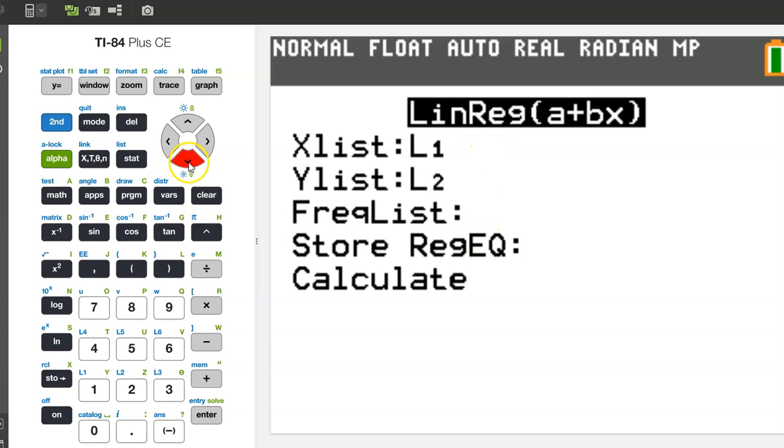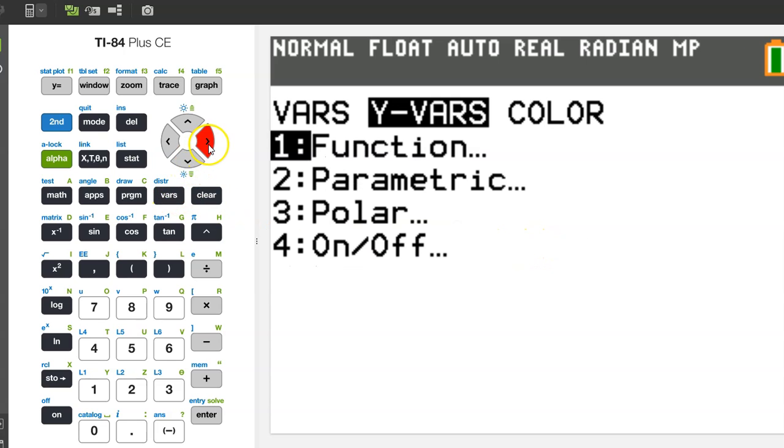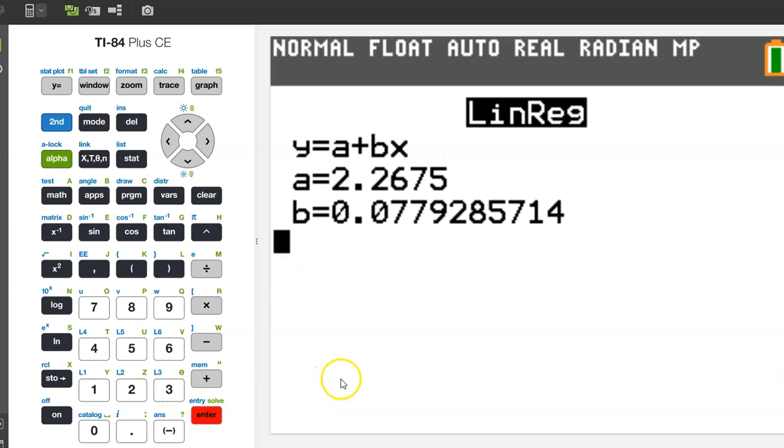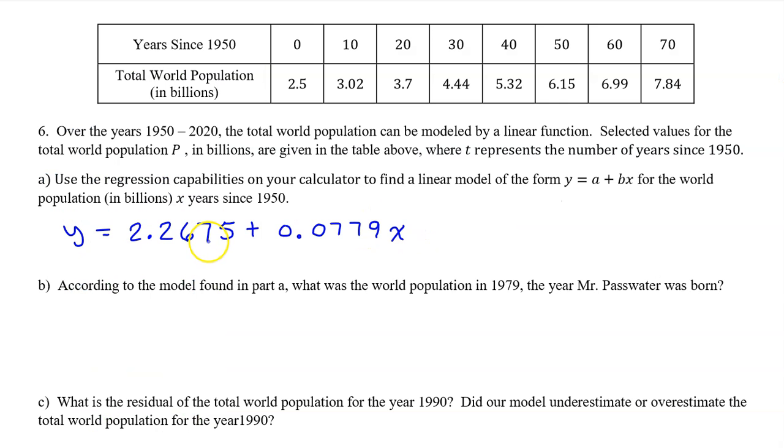Before we calculate the linear regression model, I always recommend that you store the model in Y1. So hit the VARS button, switch over to YVARS, hit enter, and hit enter again. That way if we need the regression model to do something, it'll be waiting for us right here in Y1. Now hit enter a couple more times, and kabam, the linear regression model. Plugging in the values for A and B gives us the linear regression model for the world population in billions, x years after 1950.